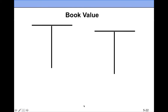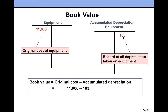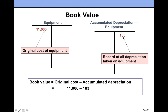Now I want to mention what book value is — you need to know the definition. Book value is the original cost. In this example, we purchased equipment for $11,000. I want to remind you how we calculated $183. We used straight-line depreciation, and the formula is: cost of the asset minus salvage value, divided by useful life.